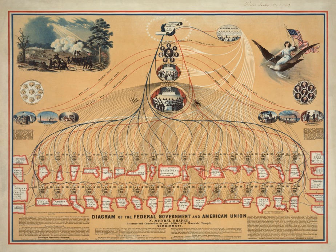The judiciary explains and applies the laws by hearing and eventually making decisions on various legal cases. Article III, Section I of the Constitution establishes the Supreme Court of the United States and authorizes Congress to establish inferior courts as their need shall arise. Section I also establishes a lifetime tenure for all federal judges and states that their compensation may not be diminished during their time in office.